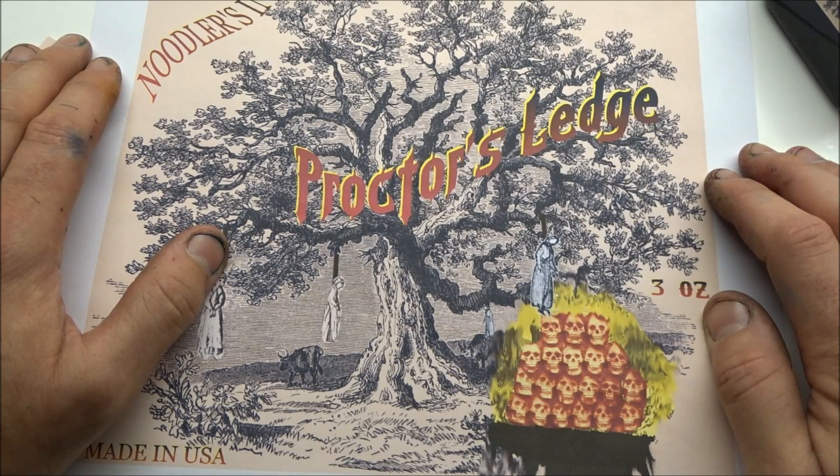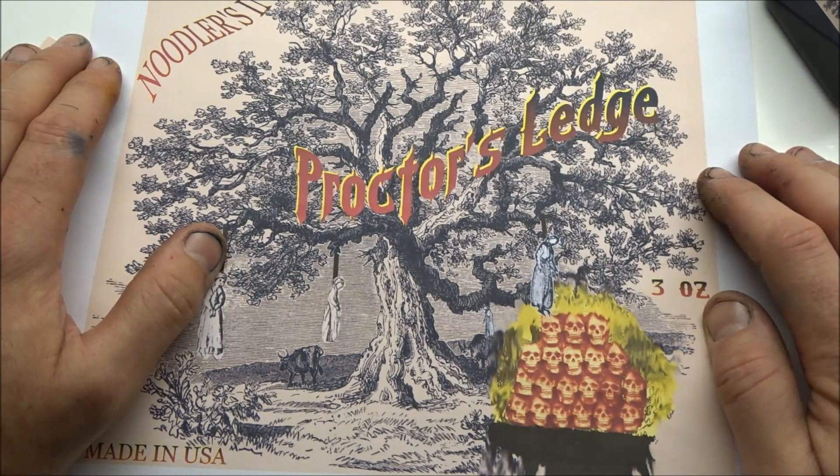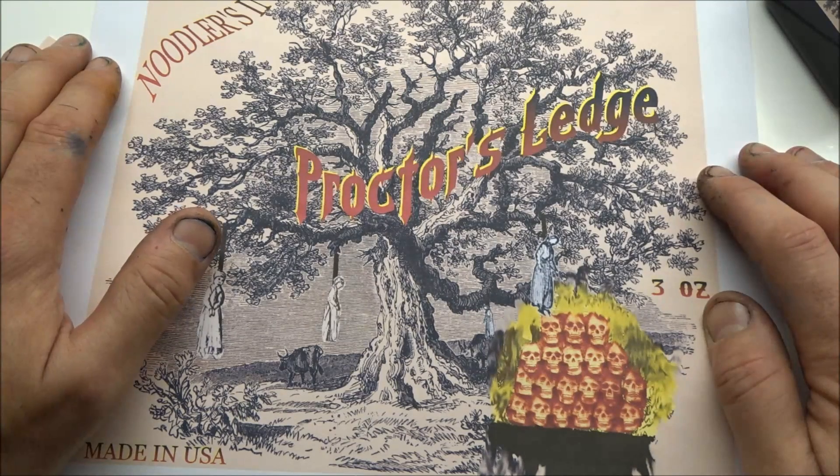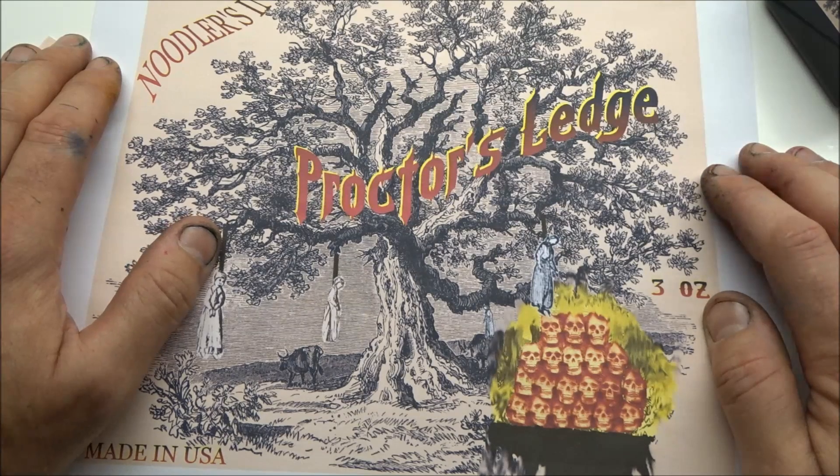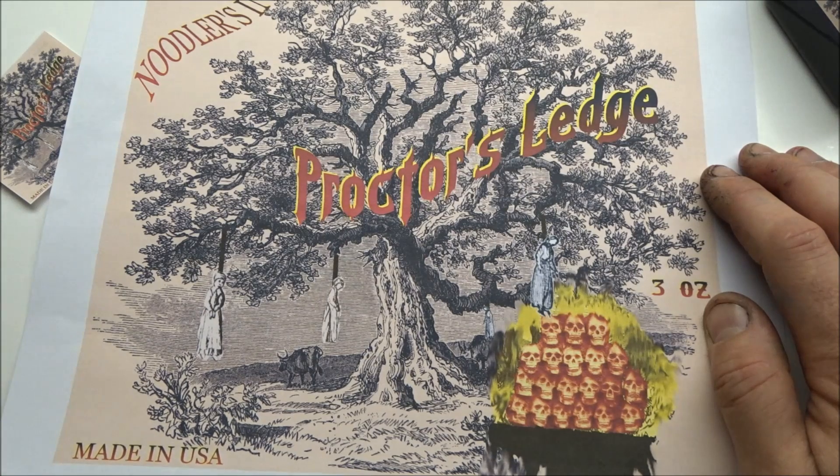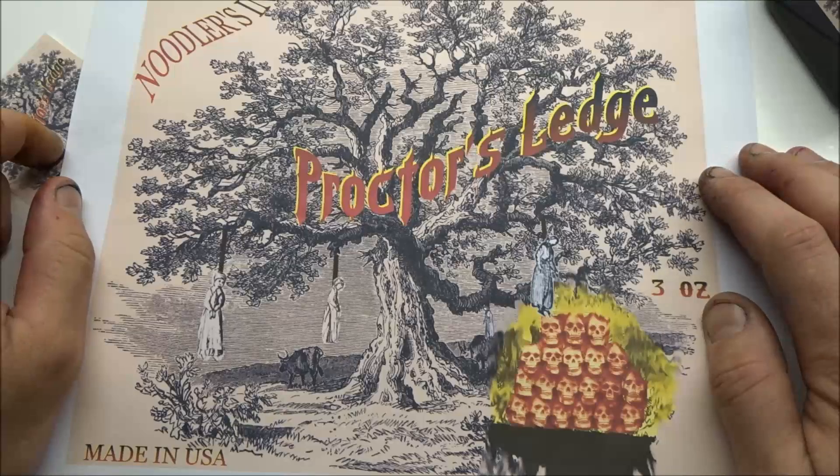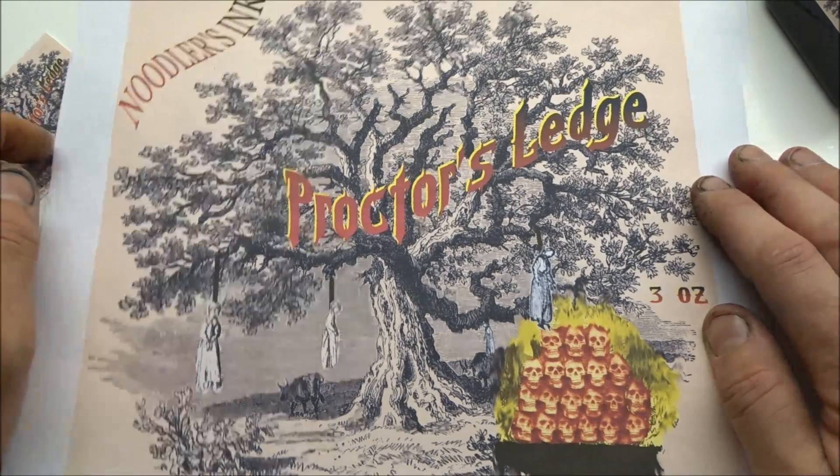In fact, the reason we know that they were hung at Proctor's Ledge and not Gallows Hill is because a 26 year old fellow went to retrieve his mother's body, Rebecca Nurse. Benjamin Nurse retrieved her. This was witnessed, this was documented. There's some historic record to it. In fact, I invite you to look up a paper done by Daniel Bodillion. He researched it quite a bit and wrote some fascinating bits of information on it.